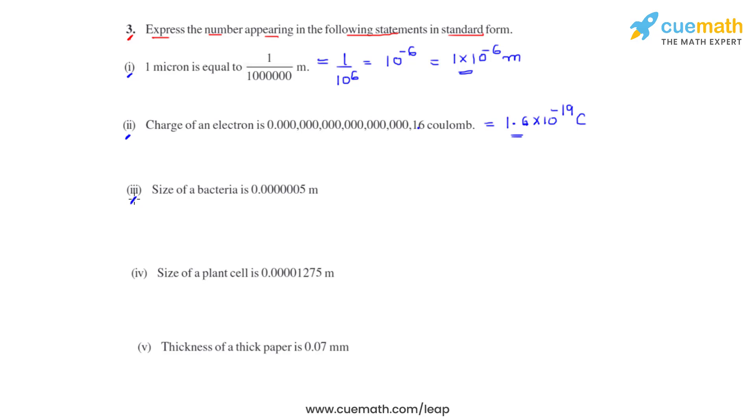Coming to the third bit, we have been given the size of a bacteria. To convert this into standard form, we will have to shift the decimal point from the given position to after 5.